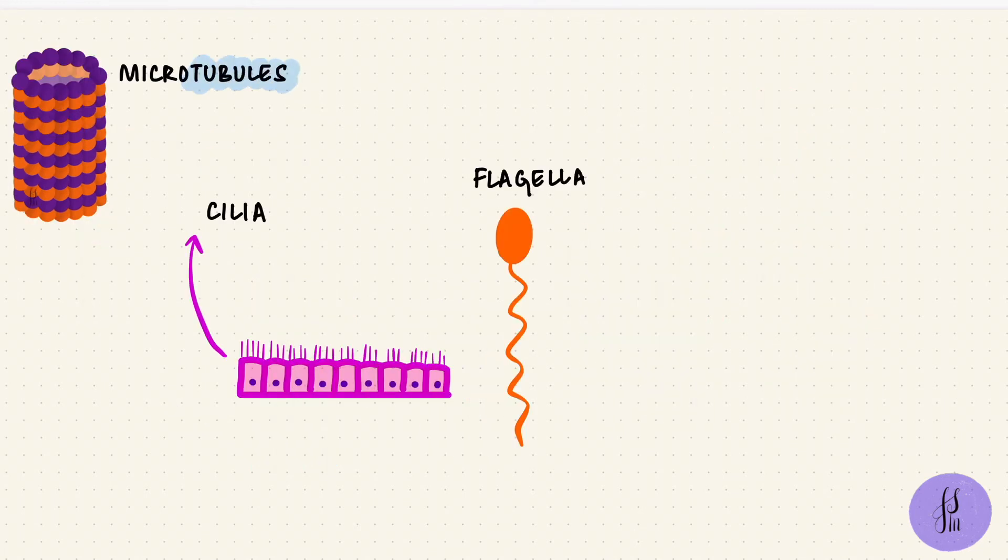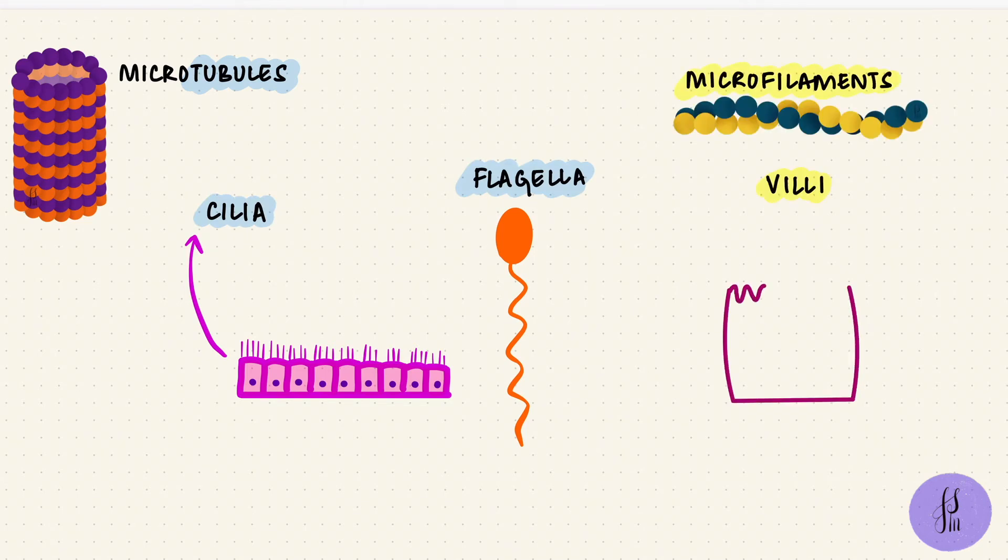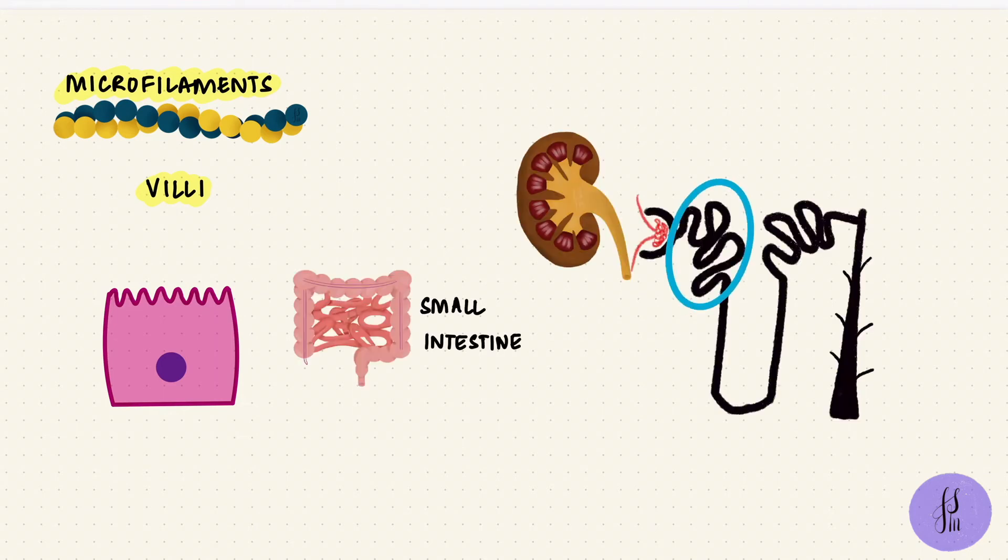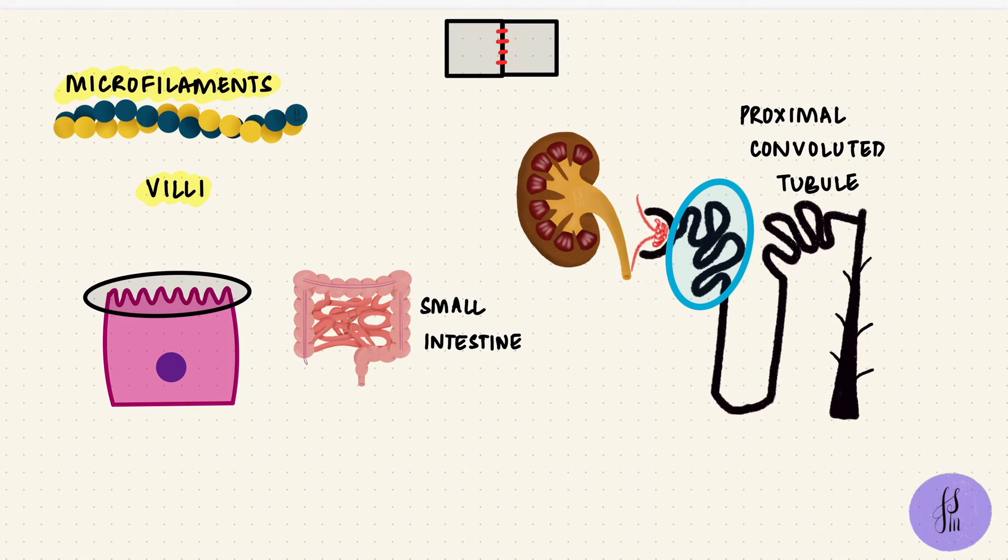Microtubules form cilia and flagella, but villi have microfilaments. Villi are those finger-like projections on the apical surface of epithelial cells in some parts of the body. What do villi do? They increase surface area. So they will be useful in areas where there's lots of absorption happening, like in the small intestine and the proximal convoluted tubule of the kidney. So microfilaments are more towards the cortex of the cells and they provide strength and support to the cell. Actin is also associated with tight junctions between cells. And those are some of the different functions that microfilaments have.